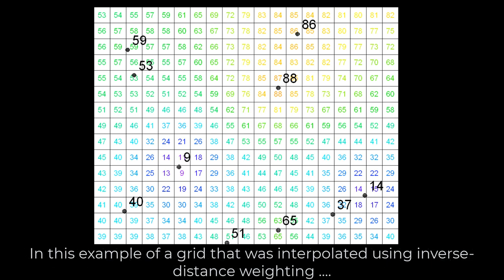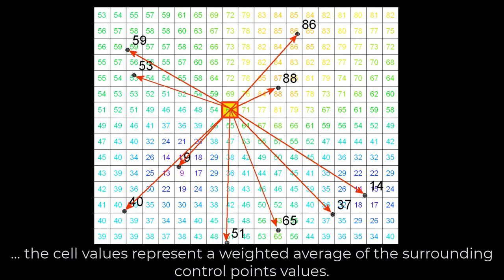In this example of a grid that was interpolated using inverse distance weighting, the cell values represent a weighted average of the surrounding control point values.